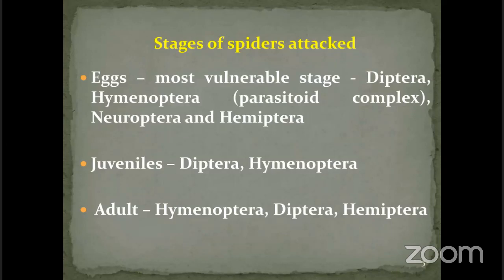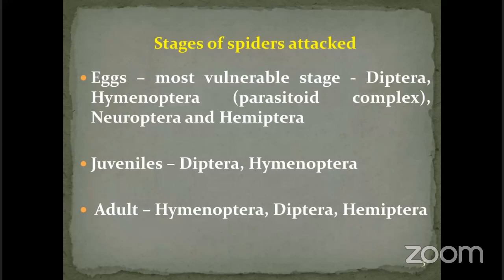What strategies do parasitoids or predators use to attack a juvenile or adult spider? In case of eggs, it is an immobile and completely vulnerable stage. It is attacked by true flies (dipterans), hymenopteran parasitoid complex, and parasites such as mantispid flies in Neuroptera. Hemipteran predators like Reduviidae — specifically the subfamily Emesinae, which are specialists — also attack these eggs. Juveniles are attacked by dipteran and hymenopteran parasitoids. Adults are attacked by hymenopteran predators and parasitoids, as well as dipterans and hemipterans.